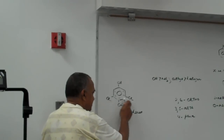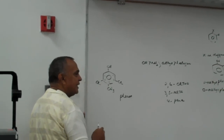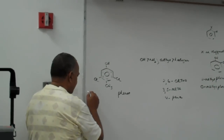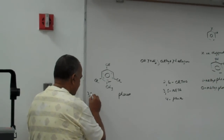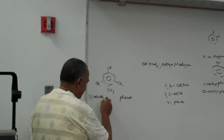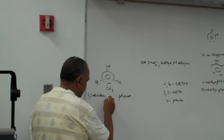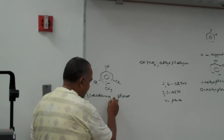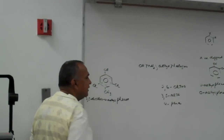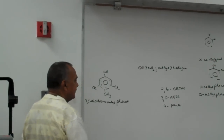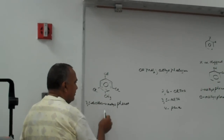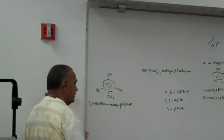Because C comes before M in the alphabet, we have to name the chlorine first. So we say 3,5-dichloro-4-methylphenol.